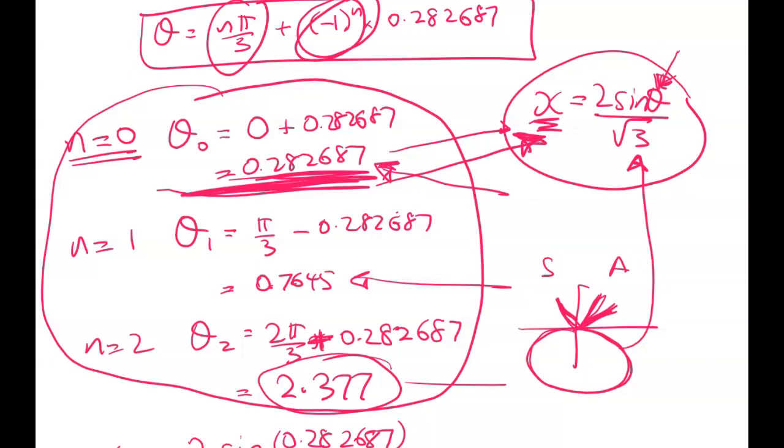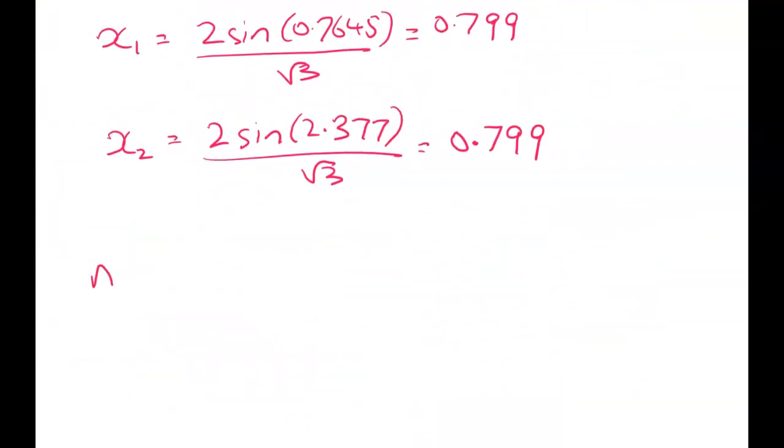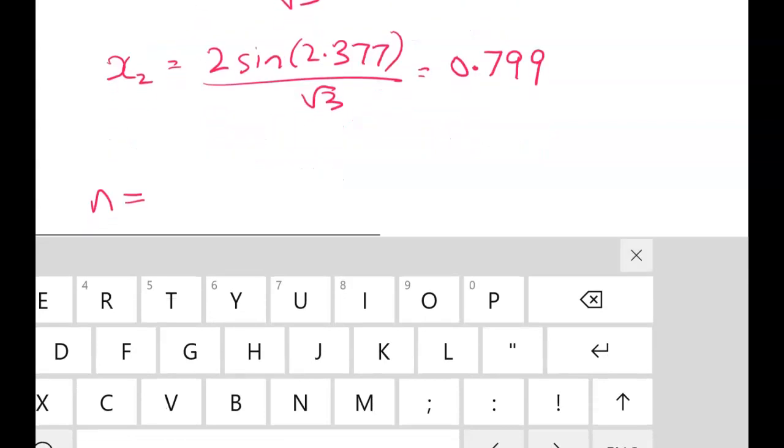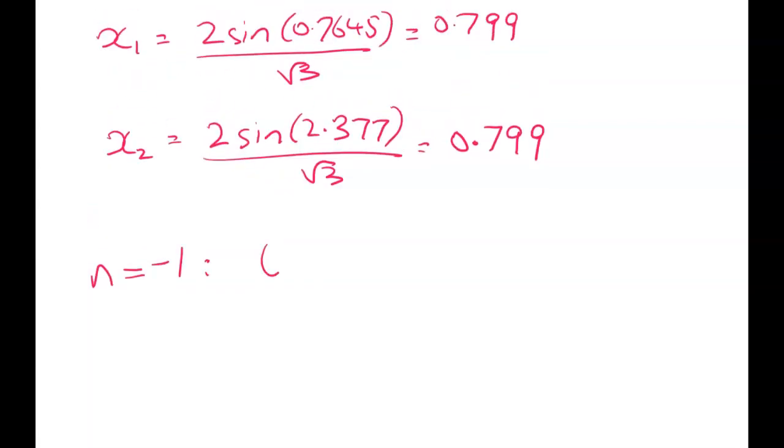So what am I going to do now? Well I think you could shove in n equals 3 and you'll get there. But I put in n equals negative 1 to generate an extra value from my general solutions. So n equals negative 1 gives us theta equals negative pi on 3 plus negative 1 to the negative 1 times 0.282687. These are very painful, right, getting these values but it has to be done. So we get negative 1.32988.